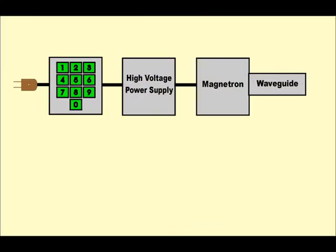A microwave oven's main components are the following. At the left we have the power plug, then the controller.